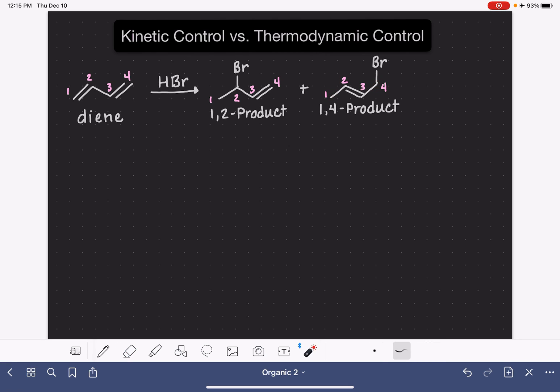We can control the distribution of the 1-2 product versus the 1-4 product by controlling or changing the temperature of the reaction. If this reaction is run at very cold temperatures, 0 degrees C, the major product is the 1-2 product and the minor product is the 1-4 product.